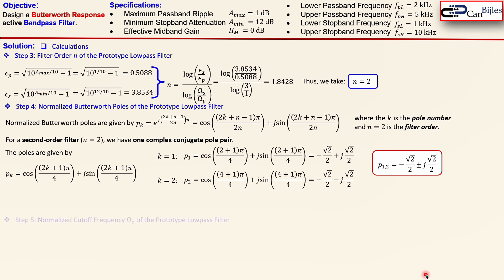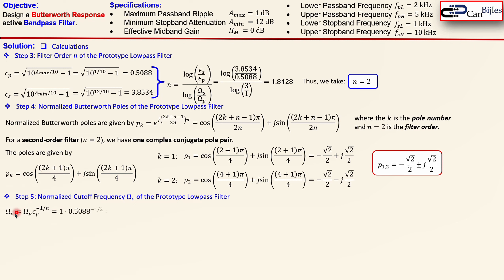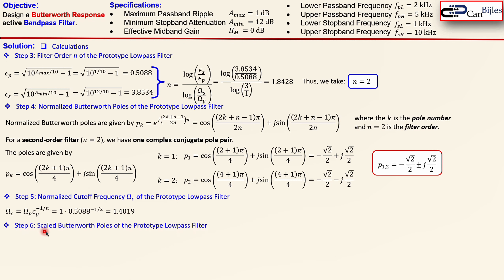Step five: we now go to the normalized cutoff frequency of our prototype filter. The normalized cutoff frequency is given by an expression involving the normalized passband frequency and epsilon_p, along with the order n. Since the normalized passband frequency is 1 and we know epsilon_p and n = 2, this results in a normalized cutoff frequency of 1.4019.